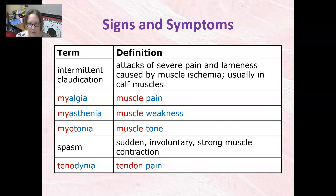Myalgia is muscle pain. Myasthenia is muscle weakness. Myotonia is muscle tone. Spasm is a sudden involuntary strong muscle contraction. And tenodynia is tendon pain.